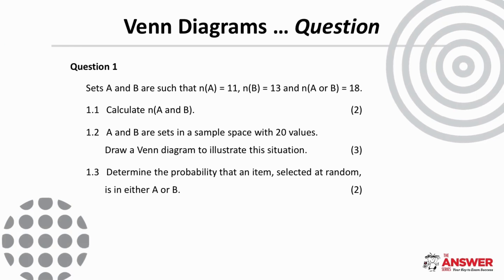Question 1 says sets A and B are such that the number of elements in A is 11, the number in B is 13, and the number in A or B is 18. We are first asked to calculate the number of elements in A and B. Then in 1.2, A and B are sets in a sample space with 20 values and we're asked to draw a Venn diagram. For 1.3 we are asked to determine the probability that an item selected at random is in either A or B.